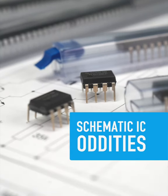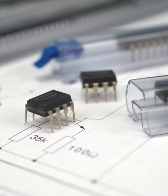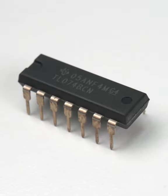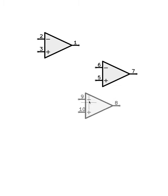If you're new to schematics, you may be thrown off by the way some ICs are represented. For example, this TLO74 op-amp chip might be drawn like this.